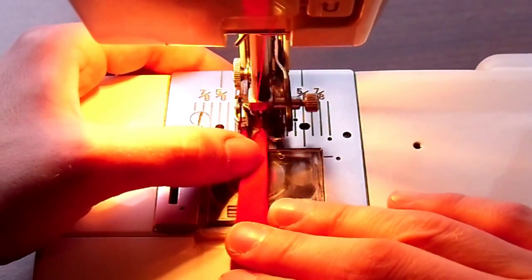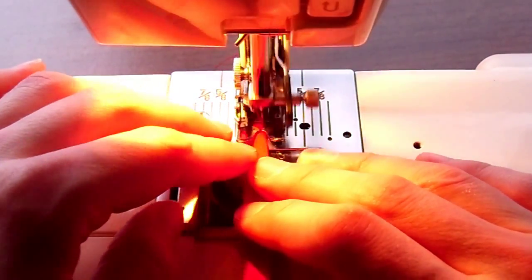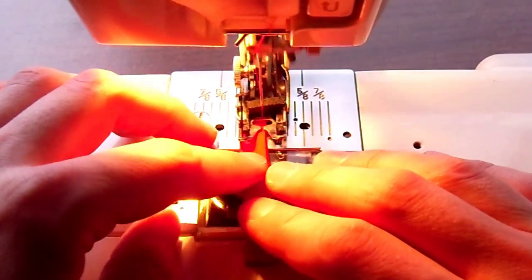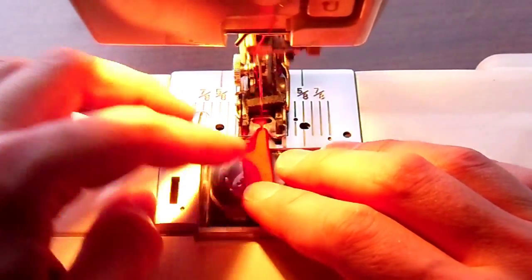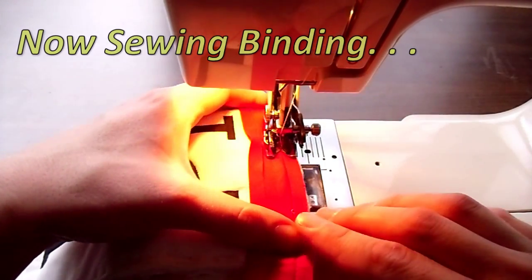Move to the machine and stitch along the two folds using a straight stitch. Okay, now we're going to stitch the binding to the potholder.